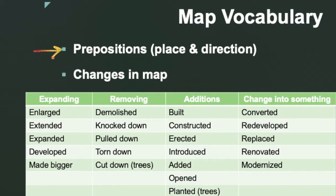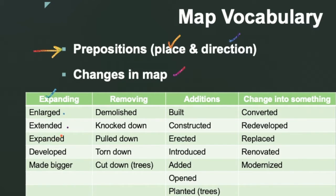This is map-based vocabulary. You should know prepositions of place and direction — directional words like 'towards,' 'leading to,' 'into,' 'before,' 'after,' 'between,' and so on. Then there are changes in the map. For expansion you can use words like 'enlarged,' 'extended,' 'enlargement,' 'extension' — use the noun and verb forms accordingly.